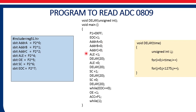Next, we generate a pulse on ALE: ALE equal to 1, call delay, ALE equal to 0, call delay. This generates a pulse on ALE used for latching the addresses. Once the address is latched, we generate a pulse on the start pin (SC connected to P2.6): SC equal to 1, delay, SC equal to 0, delay. On the falling edge of that pulse, it will start converting the analog quantity from channel 0 into its digital equivalent.